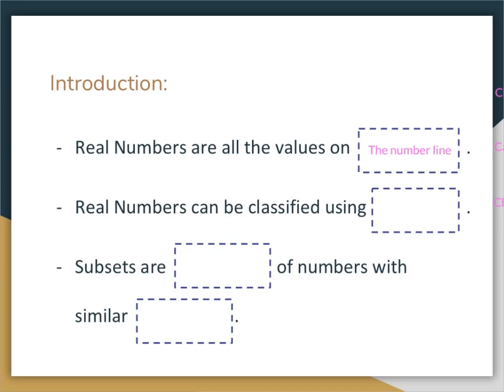Real numbers can be classified using their characteristics. Characteristics are things about the number that are going to make it stand out versus other kinds of numbers — for example, if I were to say that you were a boy or a girl, that would be a characteristic of your gender. Subsets are categories of numbers with similar characteristics. For example, if I'm talking about all of the cars in the world and then I talk about only the Fords, Fords are a subset of all of the cars. The category is cars and a subset of that is Fords.